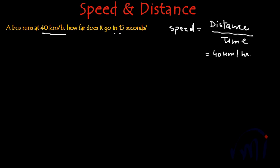What do we have to find? We have to find the distance traveled in 15 seconds. But what are we provided with? We're provided with speed in kilometers per hour. Since we have to find the distance traveled in 15 seconds, first we have to convert this speed into meters per second.